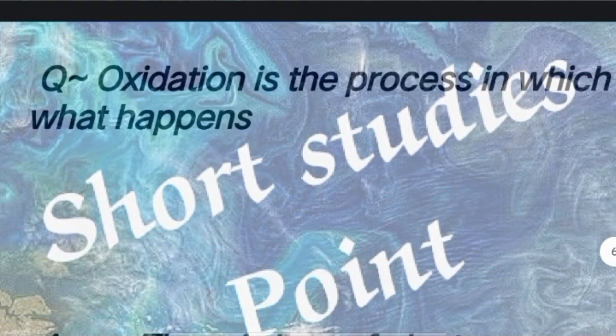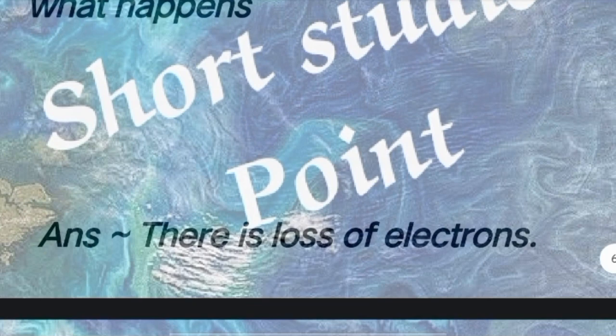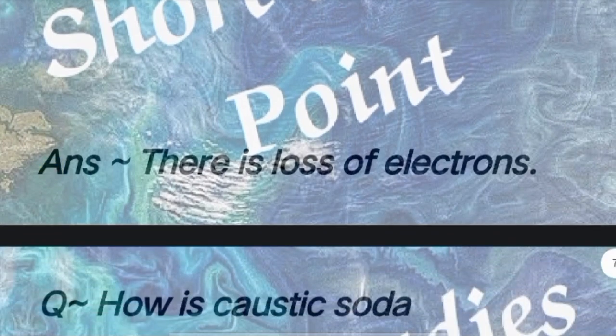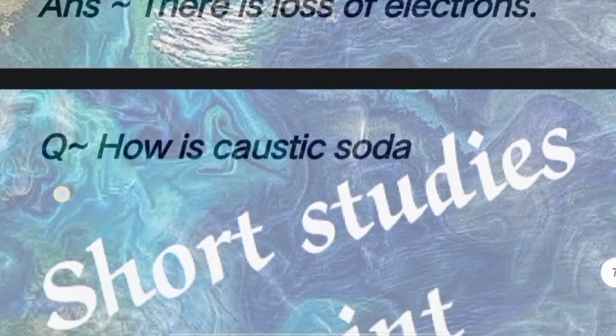Oxidation is the process in which what happens? Answer: There is a loss of electrons.